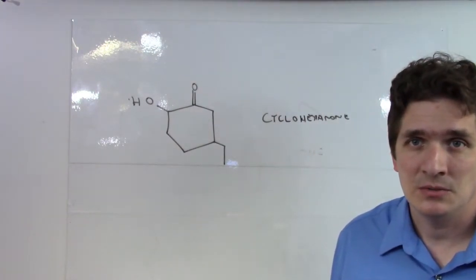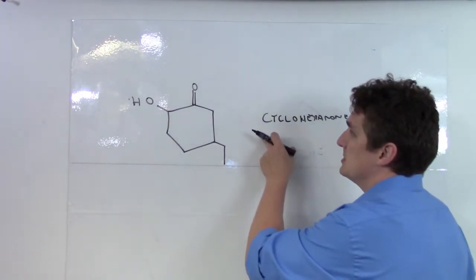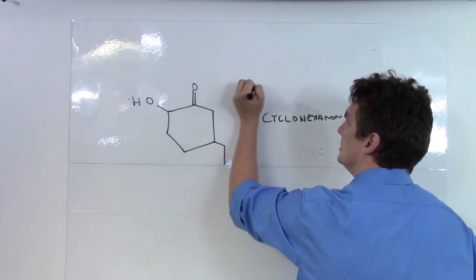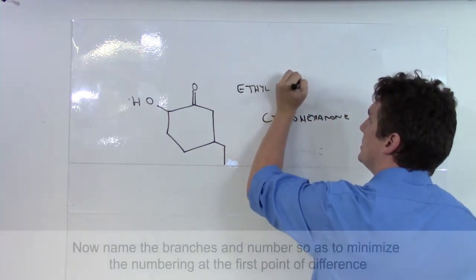Everything else is going to follow your normal naming procedures. So, we need to write out the groups in alphabetical order. So, we've got an ethyl and a hydroxy.